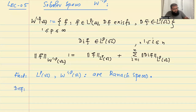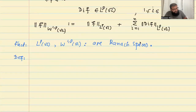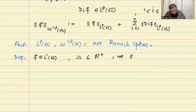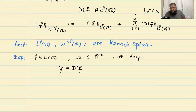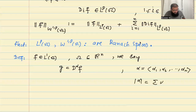Now let me define the weak derivative in a more general way — not just the first derivative, but higher order derivatives as well. Taking F from L1, where omega is some subset of R^n, we say G is the alpha-th order derivative of F, where alpha is a multi-index (alpha_1, alpha_2, ..., alpha_n), and the order of alpha is the sum of the alpha_i's from 1 to n.